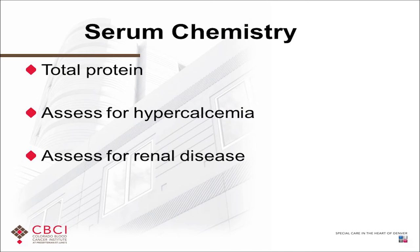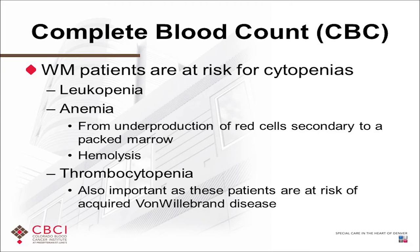Regarding von Willebrand's disease — a bleeding disorder that can be hereditary or acquired — patients with WM can have acquired von Willebrand's disease, meaning an easier tendency to bleed, especially during procedures like dental work or surgeries. If you are needing a major surgery, blood tests can be done to check for acquired von Willebrand's so you are safe during the surgical procedure.